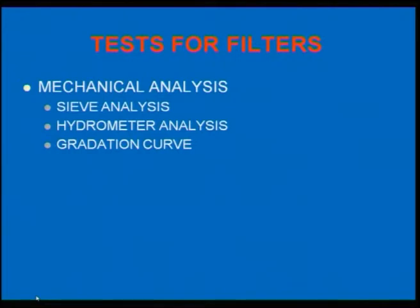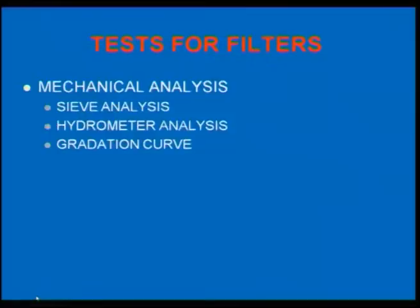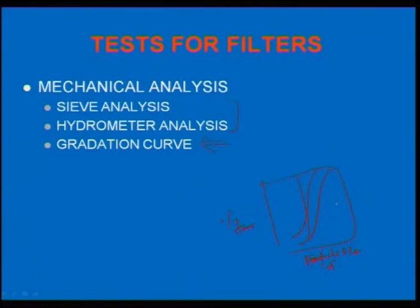Now, tests for filters. Filters are provided to allow only water to pass through while preventing passage of soil. The required test is mechanical analysis - sieve analysis and hydrometer analysis - from which you draw a gradation curve of percentage finer versus particle size diameter D. This gradation curve shows whether the soil is uniformly graded, well-graded, or gap-graded, and is required for the design of filters.